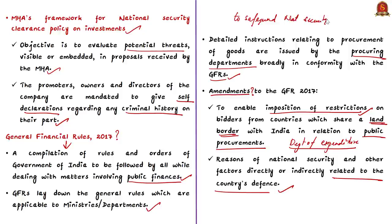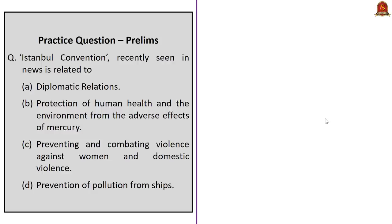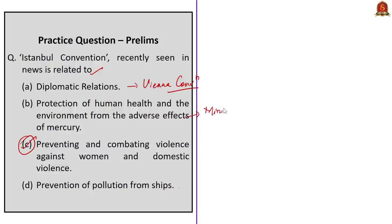We have now come to the practice questions discussion session. The first question asks what the Istanbul Convention recently seen in news is related to: diplomatic relations; protection of human health from mercury; preventing and combating violence against women and domestic violence; or preventing pollution from ships. The correct answer is option C — preventing and combating violence against women and domestic violence. The diplomatic relations convention is the Vienna Convention on Diplomatic Relations of 1961; the second option relates to the Minamata Convention on Mercury of 2013; and the last option is the MARPOL Convention of 1973.